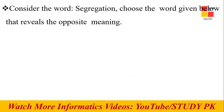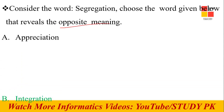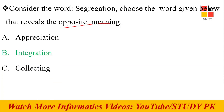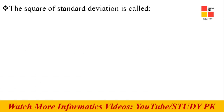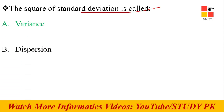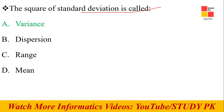Next question: Consider the word 'segregation' — choose the word with the opposite meaning from the options. Integration is the right option. Next question: The square of standard deviation is called variance. So the right option is variance.